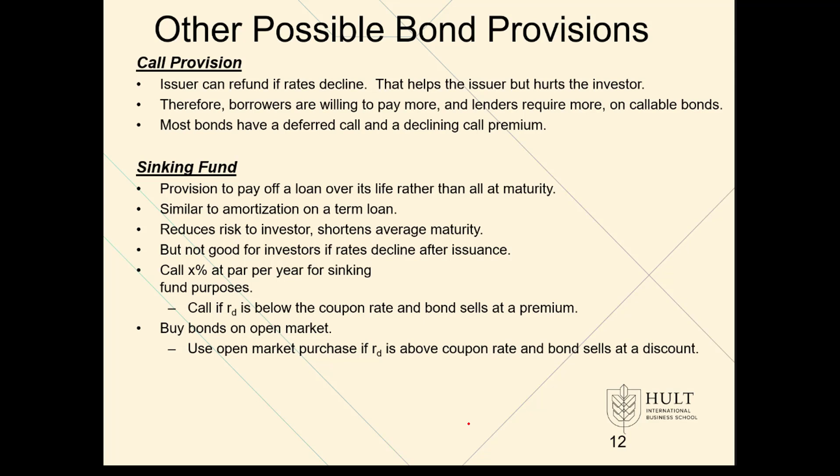There are two ways for a sinking fund to be operationalized. One is that the issuer sets money aside — puts it in the box and keeps it for five years. The other way is to reduce the amount outstanding by going to the market and buying back some of the bonds along the way. That version of a sinking fund is actually a misnomer because you're doing an early retirement of some of the bonds.